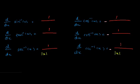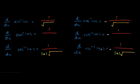Step four: put square root signs for the top two functions — this one and this one — and the bottom two functions — this one and this one.